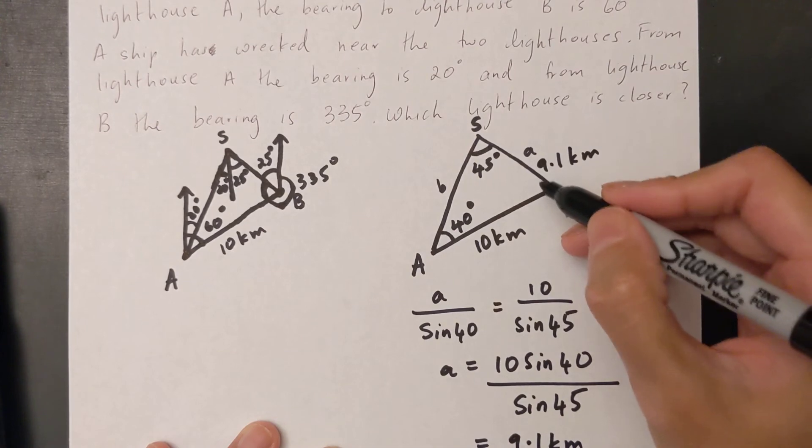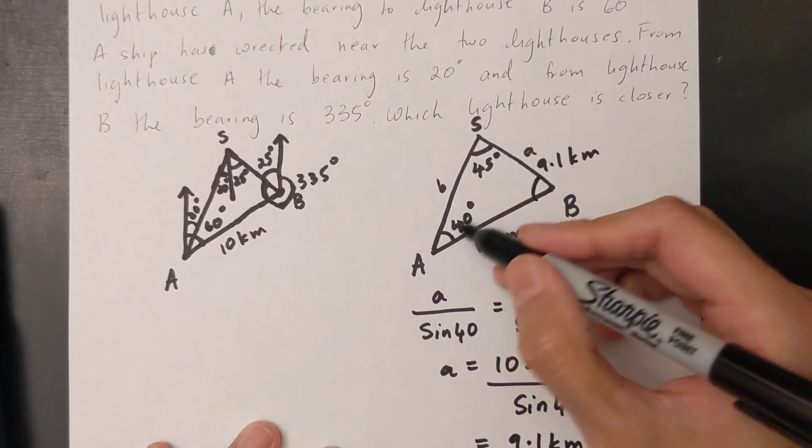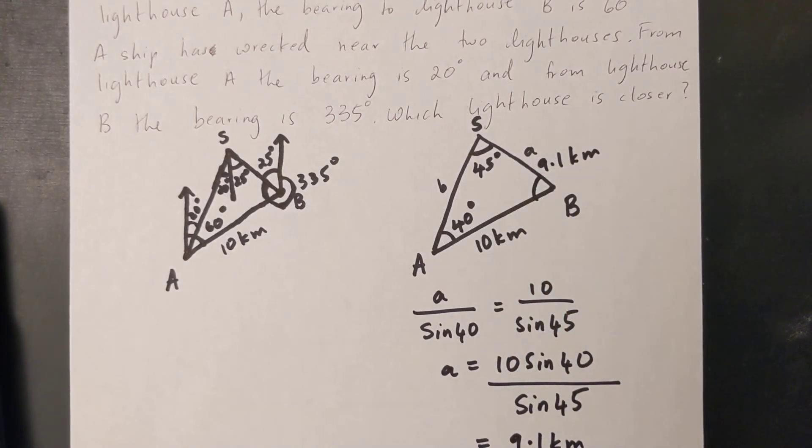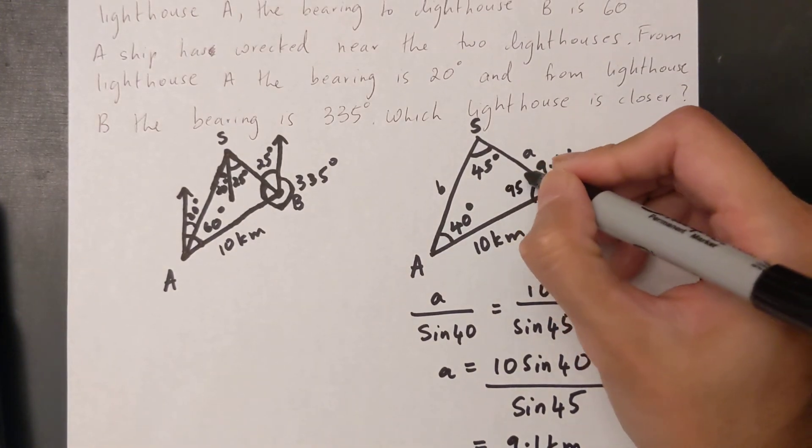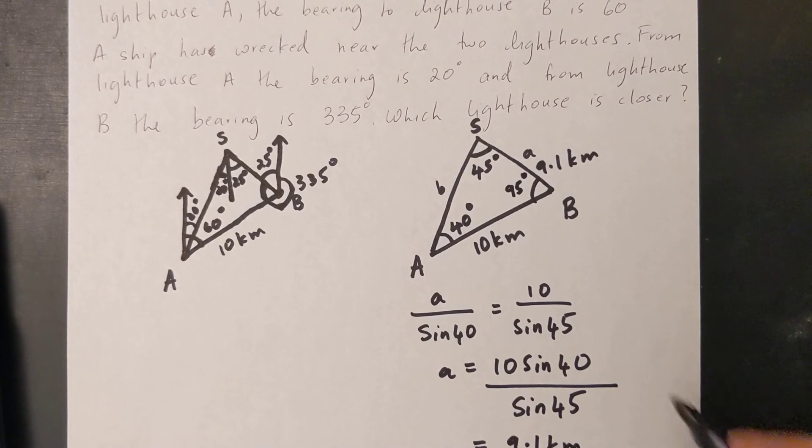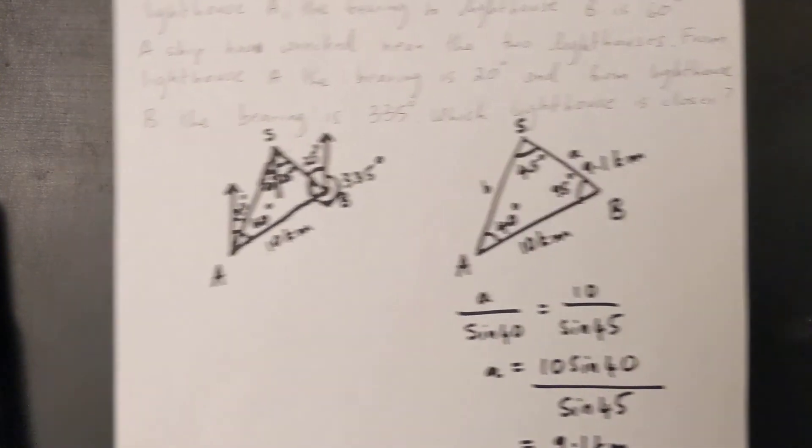You can find this angle next. So 180 minus 40 minus 45 which is 95 degrees. And again I'll use sine law to find small b. So b over sine 95 equals 10 over sine 45.